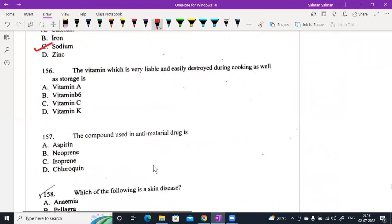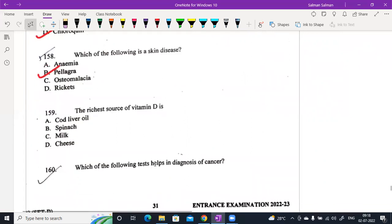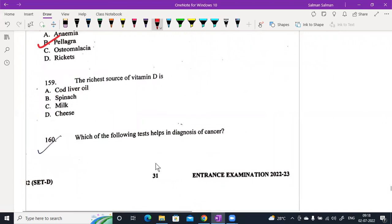The vitamin which is very labile and easily destroyed during cooking as well as storage is vitamin C. The compound used in anti-malarial drug is chloroquine. The following is skin disease, it is pellagra. The richest source of vitamin D is cod liver oil, option A.